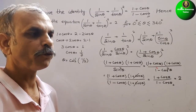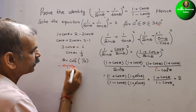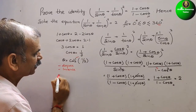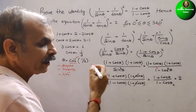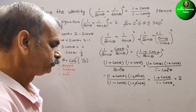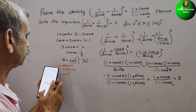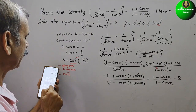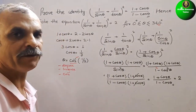To find this value we need a scientific calculator. We set it to degree mode, use the inverse function, then cos inverse, and enter 1 ÷ 3. We get 70.52°, so we take θ ≈ 70.5°.